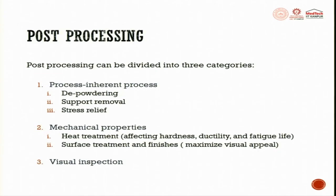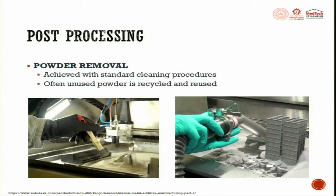Post processing can be divided into three categories: process inherent process, mechanical properties, and visual inspection. Process inherent steps include depowdering, support removal, and stress relief. Mechanical properties include heat treatment and surface treatment finishing. These are some of the few post processing steps.